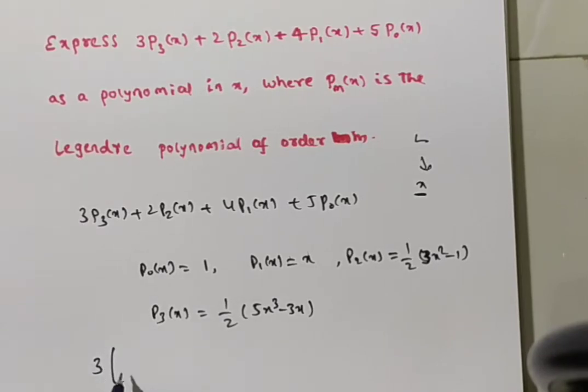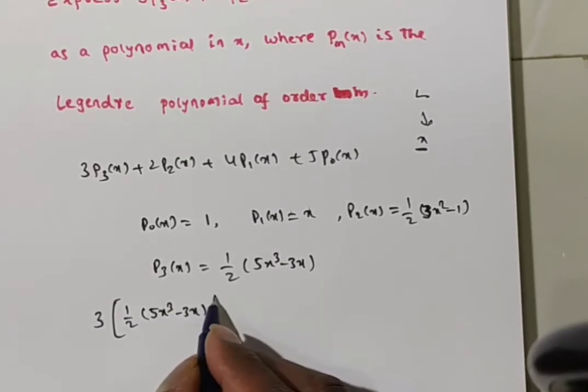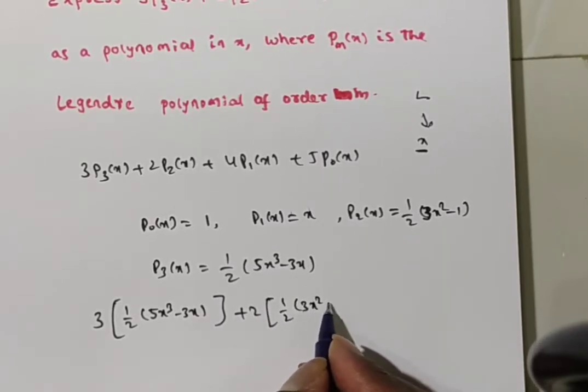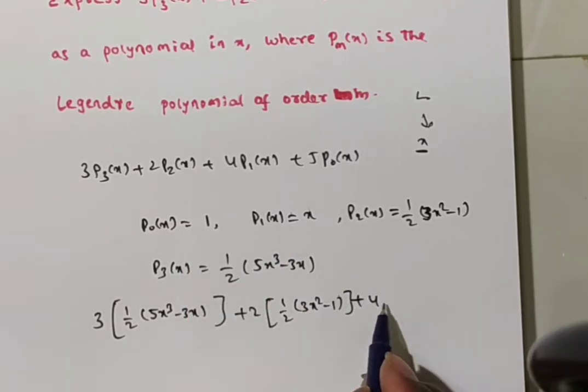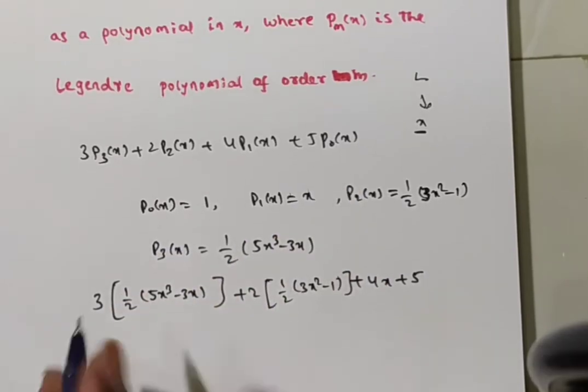Now you substitute here. This is 3 times ½(5x³ - 3x) plus 2 times ½(3x² - 1) plus 4 times x plus 5 times 1, so 5.